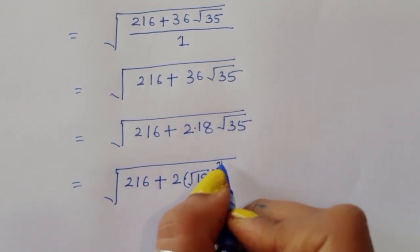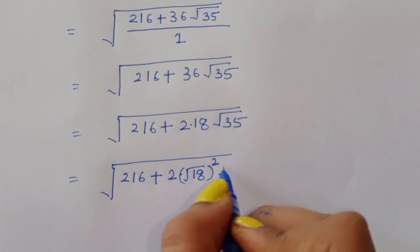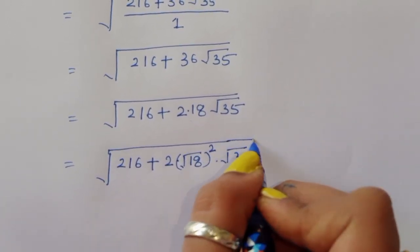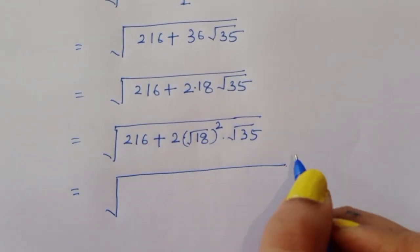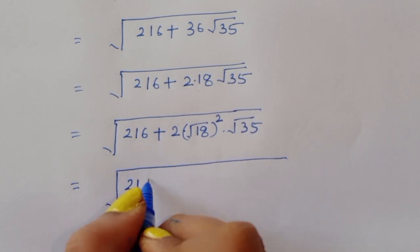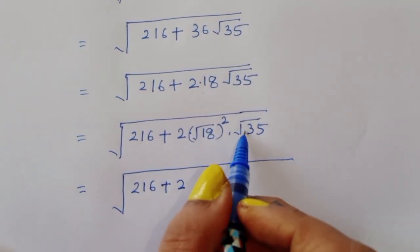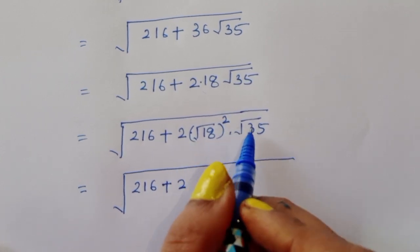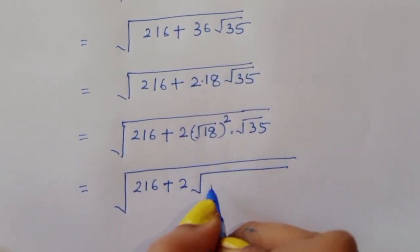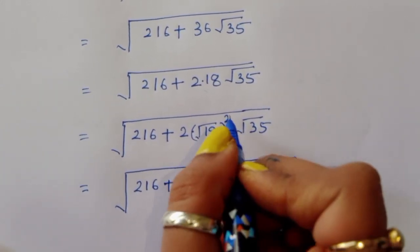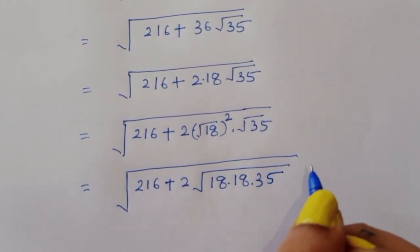Since the square cancels with the square root, the value stays 18. So we have 216 plus 2 times square root of 18 squared times square root of 35, which we can write as 216 plus 2 times square root of 18 times 18 times 35.